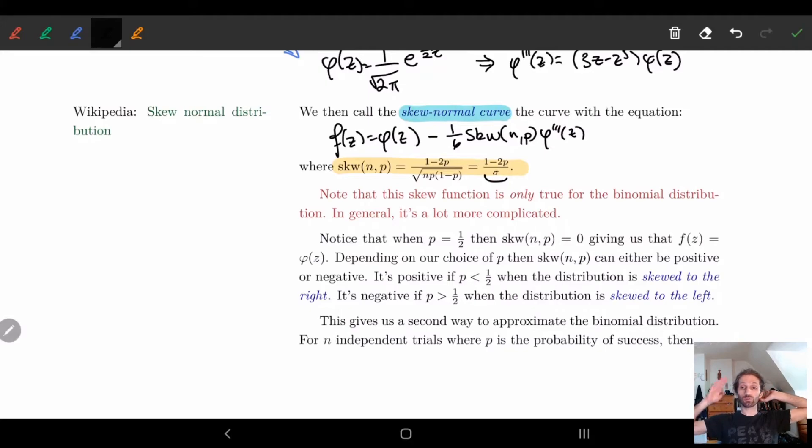Now remember that this skew function is only true for the binomial distribution. We'll get into the more general cases in the future, but for now just worry about this. It's going to get more complicated in the future, but for now we're just worrying about the binomial distribution.